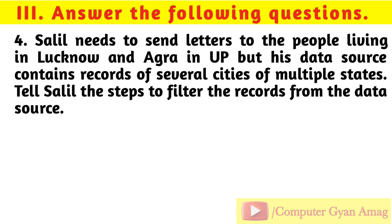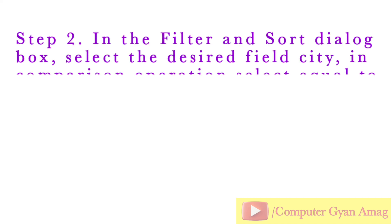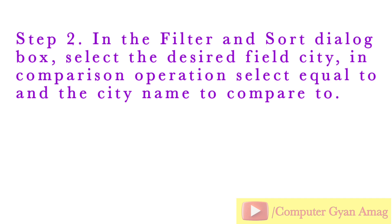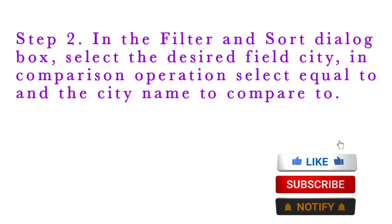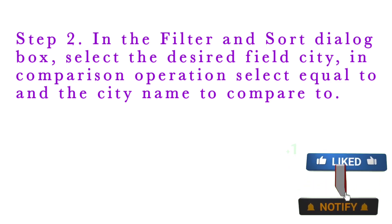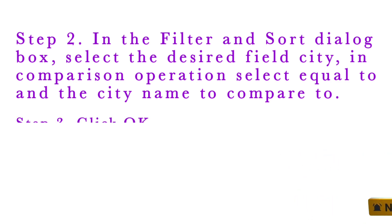Question 4: Salil needs to send letters to people living in Lucknow and Agra, but his data source contains records of several cities of multiple states. Tell Salil the steps to filter the records. Step 1: In the Mail Merge Recipients dialog box, click on the Filter option. Step 2: In the Filter and Sort dialog box, select the desired field 'City'; in the comparison operation, select 'Equal To'; then enter the city name to compare. Step 3: Click OK.